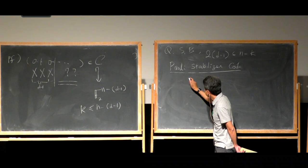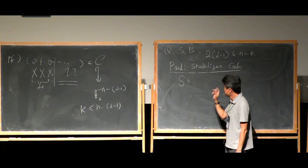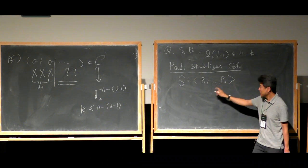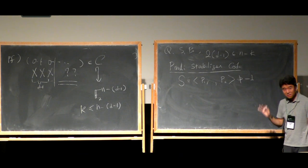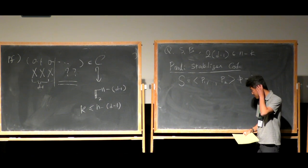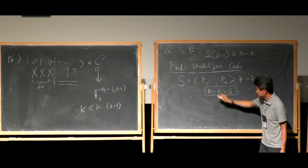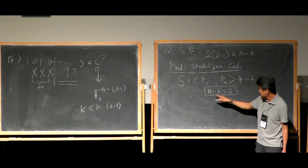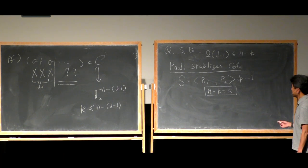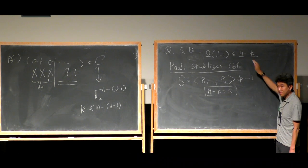A Pauli stabilizer code is defined by a group of tensor products of Pauli matrices. There will be some number of generators, they should all be commuting, and they should not contain minus identity. That's the definition. The number of encoded qubits has a simple relation with the generators: the number of encoded qubits K is exactly the ambient number of qubits N minus the number of constraints. I'm just reviewing what Nicolas told you last week.